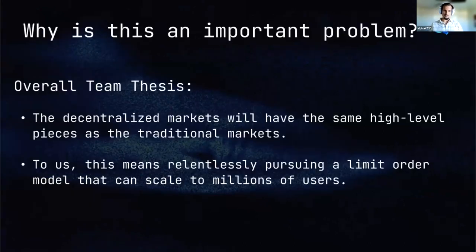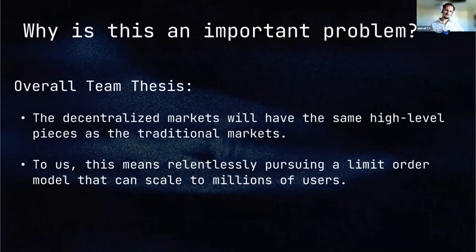Why is this an important problem? Our overall team thesis is that decentralized markets will look much like traditional markets, with the caveat that things work technically different. To us, this means relentlessly pursuing a limit order model that can scale to millions of users, so that day one, when somebody launches their token, they have these features available.